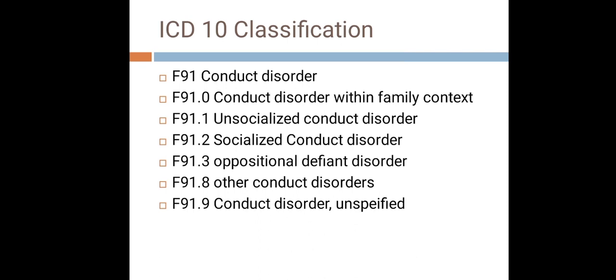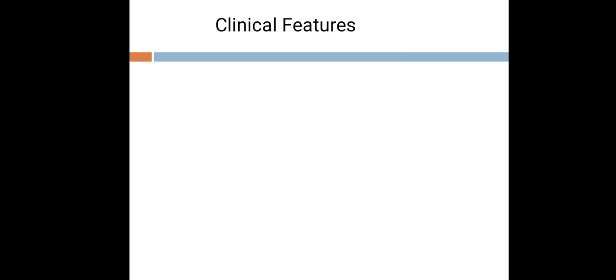To summarize the ICD-10 classification: F91 is conduct disorder with main characteristics of dissocial, aggressive, and defiant conduct that is repetitive and persistent. F91.0 occurs within the family context; F91.1 is unsocialized; F91.2 is socialized; and F91.3 is oppositional defiant disorder, diagnosed for children below 9 to 10 years. Now let us discuss clinical features.